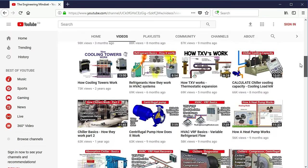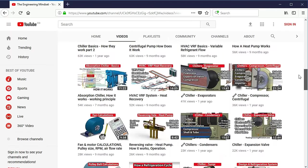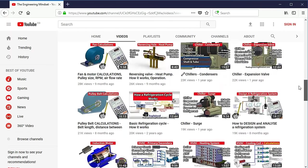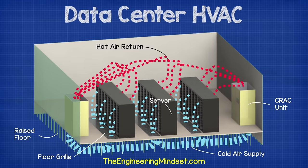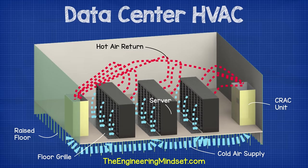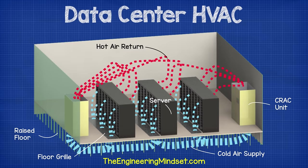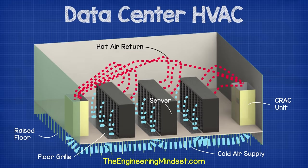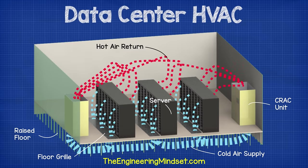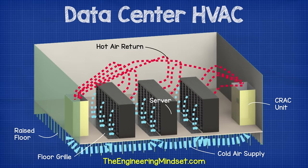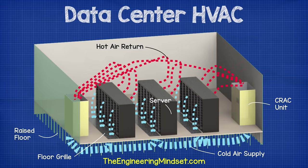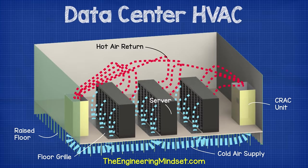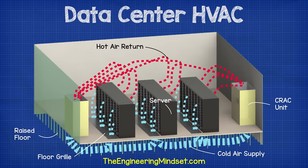If you want to learn more on these, links are in the video description below. Coming over to the server room, one of the most common methods currently used is to place the server racks onto a raised floor and then use computer room air conditioners or CRAC units to distribute the conditioned air to the server racks.